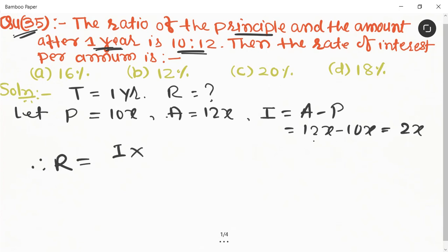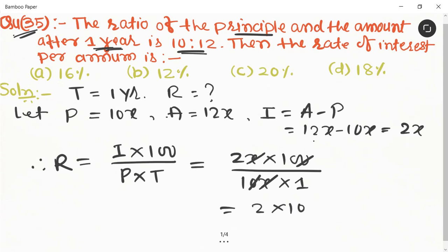So R is equal to 2x into 100 upon 10x into 1. The zeros cancel and x cancels, so it is equal to 2 into 10, which is equal to 20% per annum. This is the required answer.